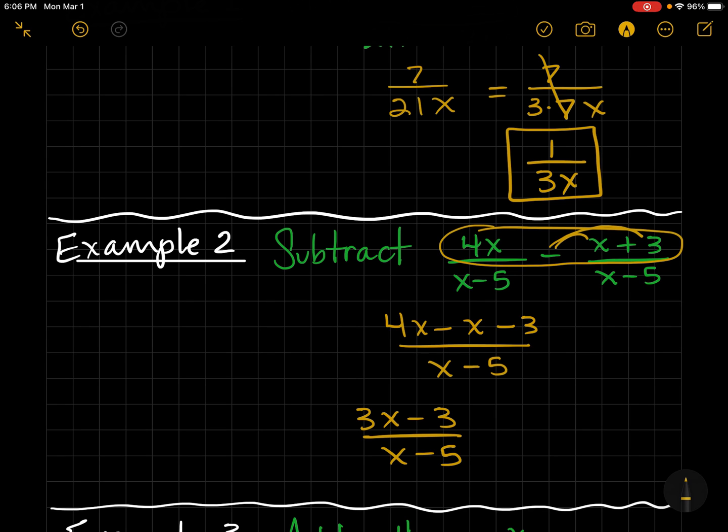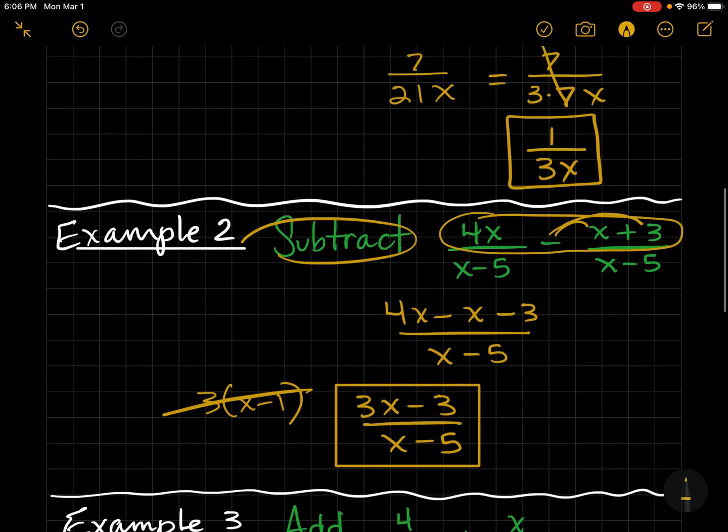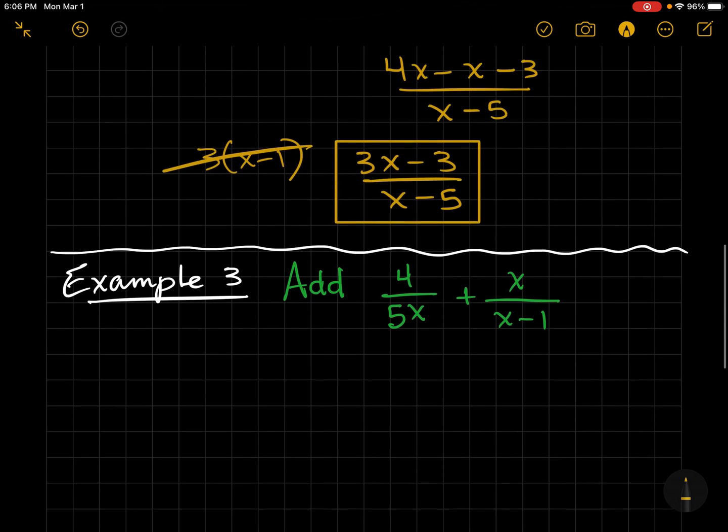Usually I have students ask, should I factor the numerator? The directions say subtract. We've subtracted. There's no common factors. If we did factor, it would be 3 times x minus 1. None of that's going to cancel with the denominator. So there's no need to do that. And with this process, you're likely not going to find any common factors.